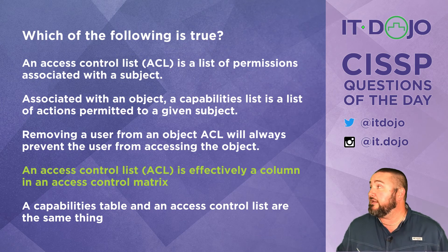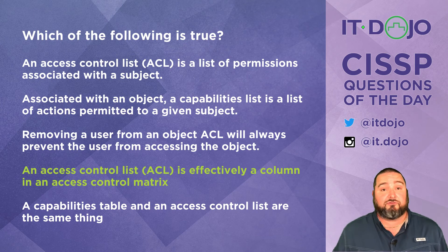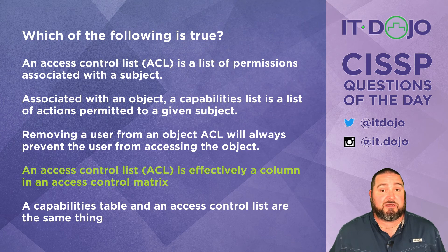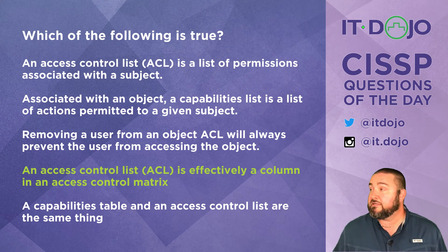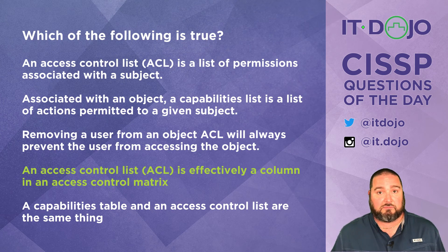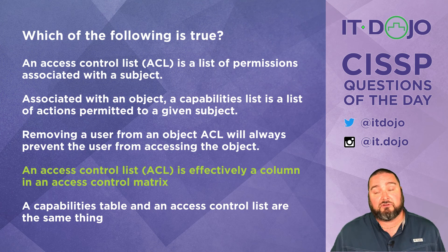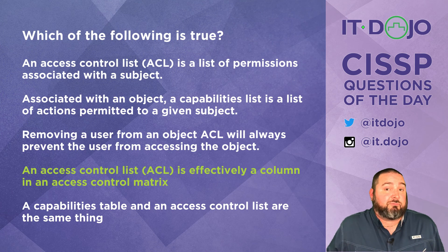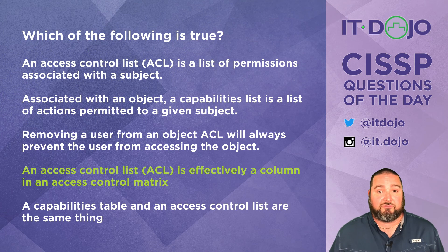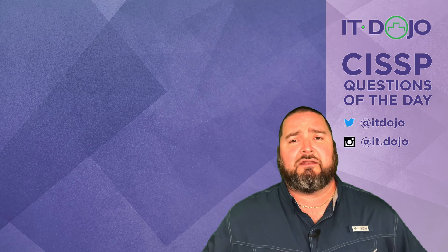Everything just said also tells you the last answer choice is not right — an access control list and an access control matrix are not the same thing. They are indeed different; in fact, an access control list is really just part of an access control matrix.